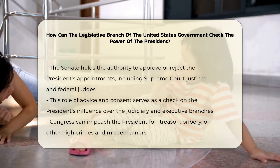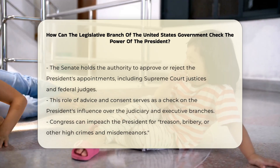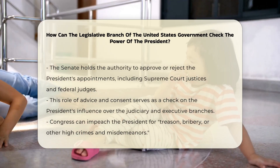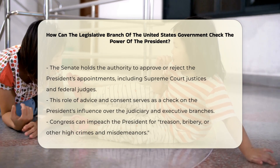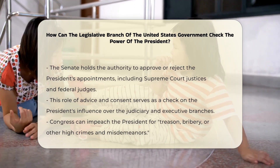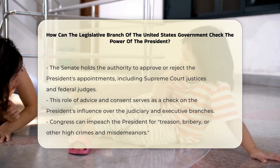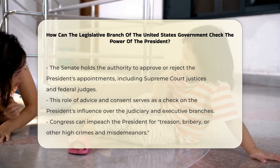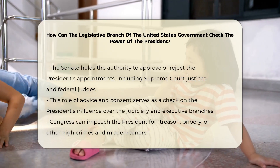Appointment approval. The Senate has the power to approve or reject many of the president's appointments, including Supreme Court justices, federal judges, and high-ranking executive branch officials. This advice and consent role is a significant check on the president's power to shape the judiciary and executive branches.